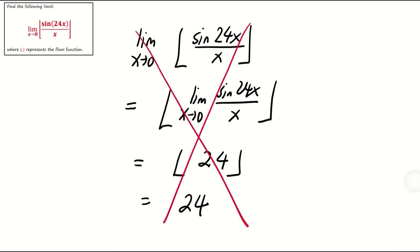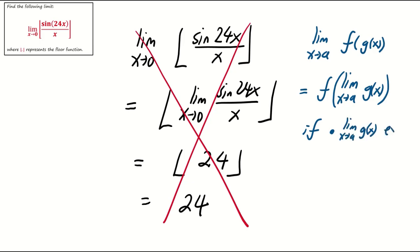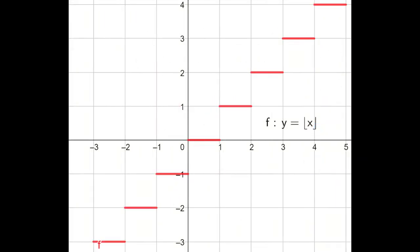This is incorrect because it assumes that the limit as x tends to a of f of g of x equals f of the limit as x tends to a of g of x. This only holds if the inner function's limit exists and the outer function is continuous at that limit. The floor function, as we have seen, is not continuous at the relevant values.